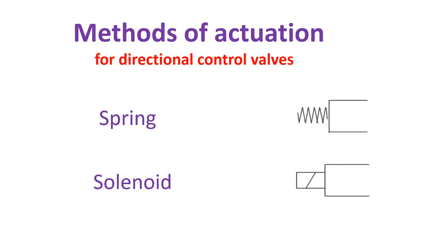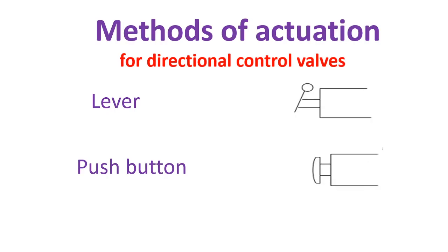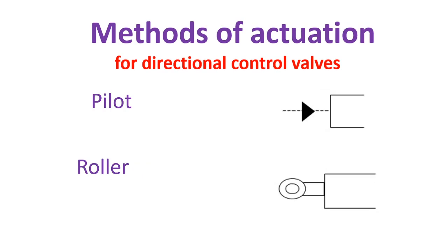The next topic is the method of actuation for directional control valves. This is the symbol for spring. The next one is symbol for solenoid. Lever. And push button. Pilot. Next, roller.